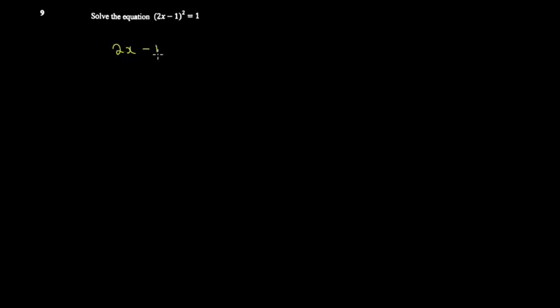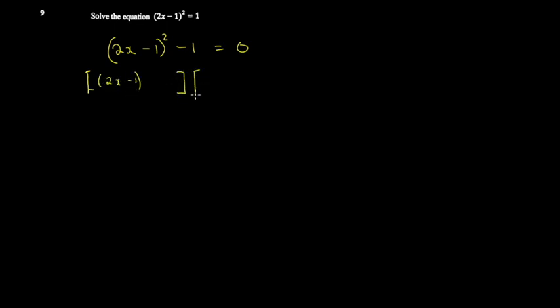The other way to solve the same problem is to use difference of two squares. This term goes to the side so it becomes negative 1 equal to 0. This one is a square, this one is a square, and you have a minus — so it's a difference of two squares. You can go ahead and write (2x minus 1) in a bracket.